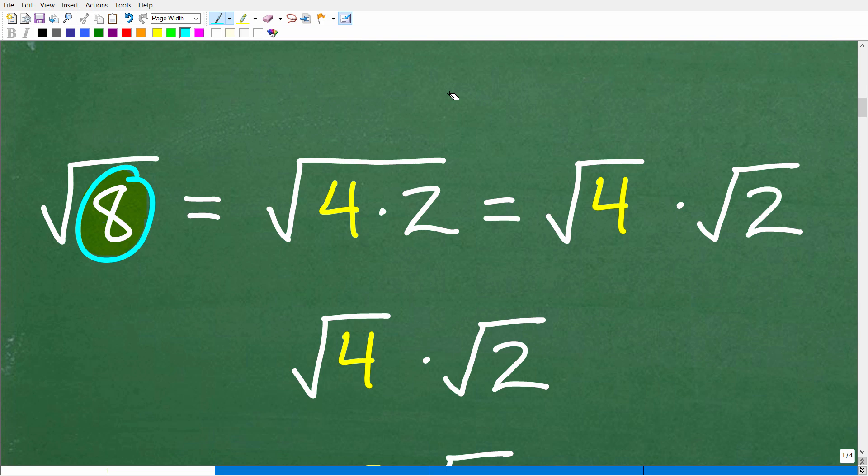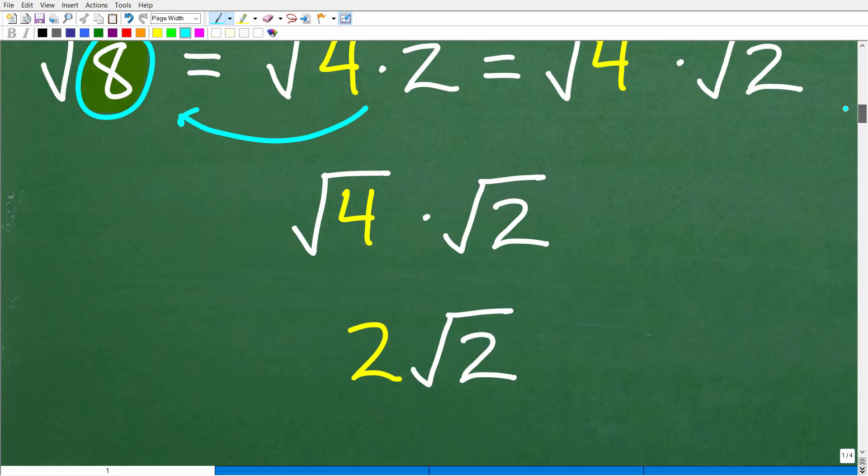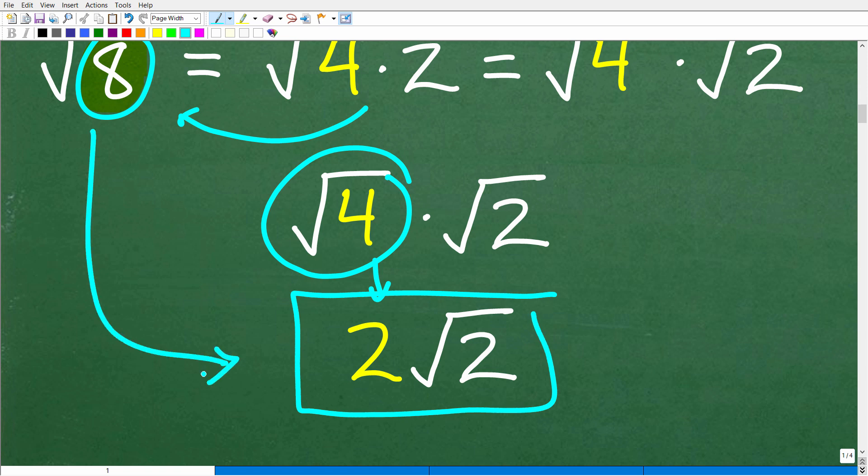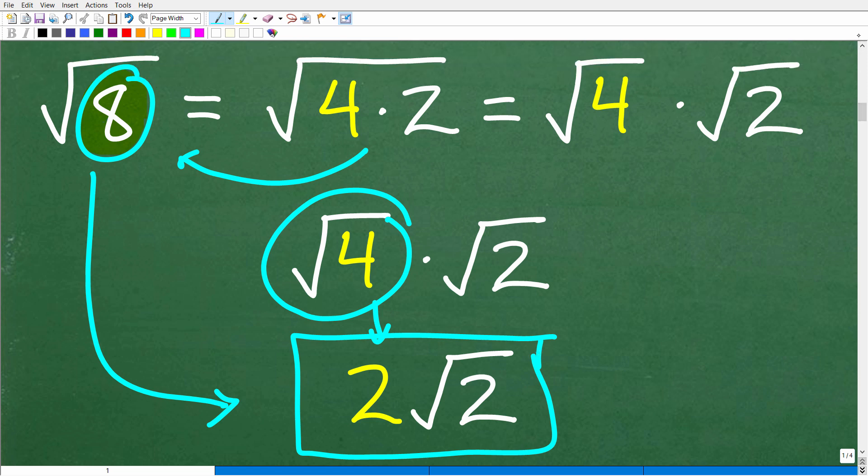So the square root of 4 times 2, we can write as the square root of 4 times the square root of 2. This is a very powerful property, and really this is going to be the secret to doing this problem. Now what's the value of doing this? Well, here we have the square root of 4 times 2, which of course is the square root of 8. But now we have the square root of 4 times the square root of 2. We can simplify this. So the square root of 4 times the square root of 2, the square root of 4 is 2. So the square root of 8 really we can write as 2 square root of 2.